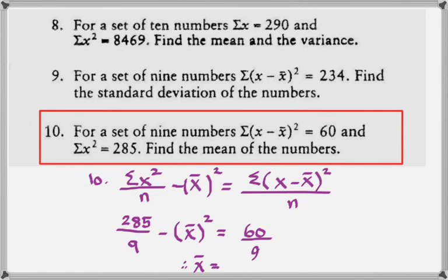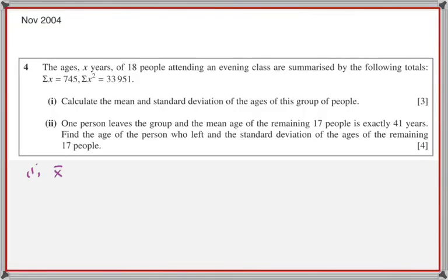If the examiner asks for Σx, the answer is yes: x̄ = Σx/n, therefore Σx = n × x̄. Now, November 2004 — a nice exam question about summarized data. The ages x years of 18 people attending an evening class are summarized by: Σx = 745, Σx² = 33951. The whole question is based on the definitions of Σx (sum of x) and Σx² (sum of squares of x).